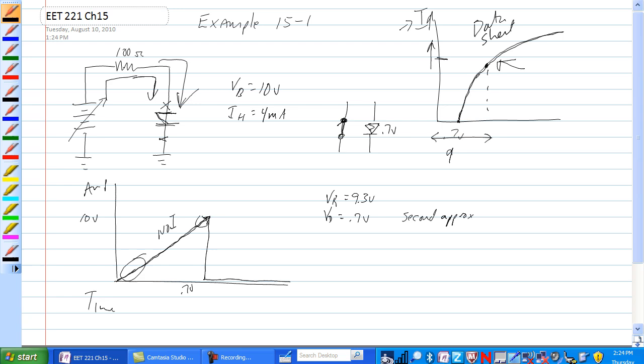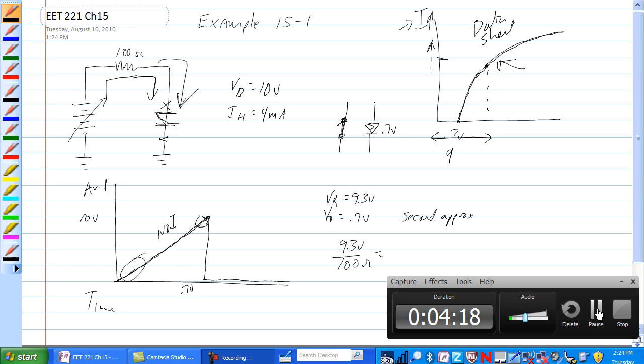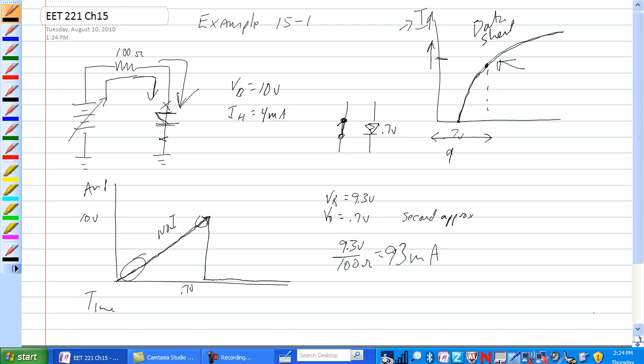The amount of current through this would be 9.3 volts divided by 100 ohms, which is 93 milliamps.